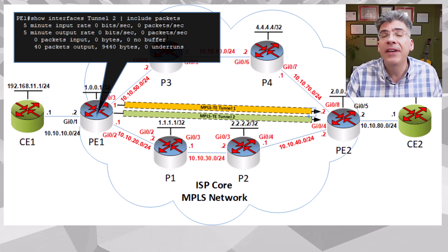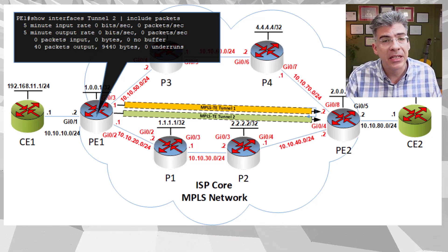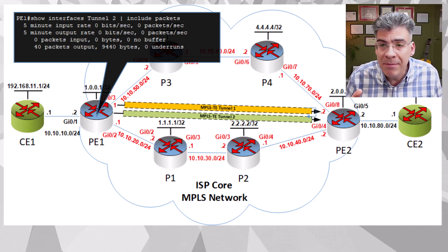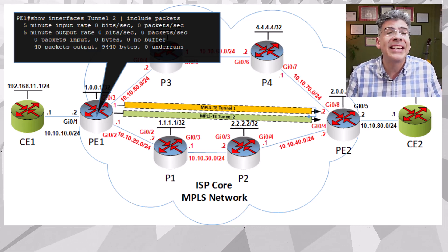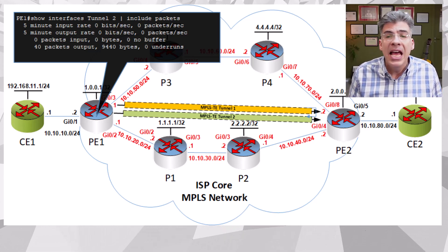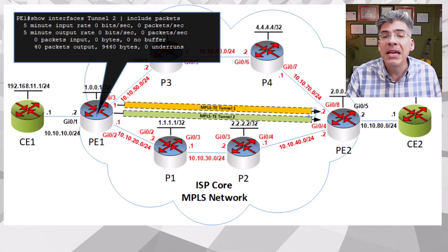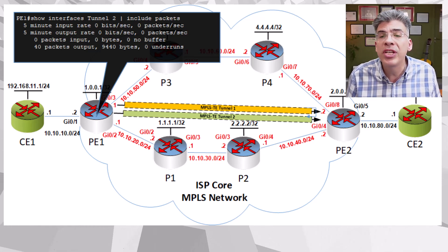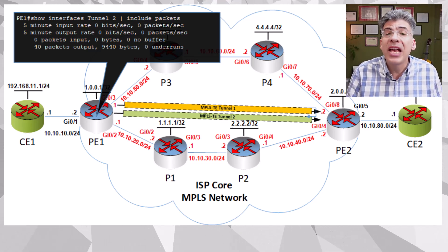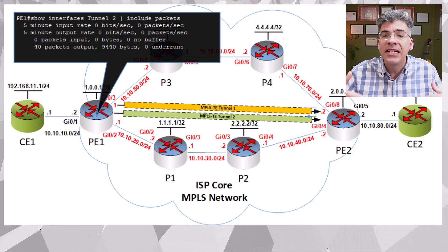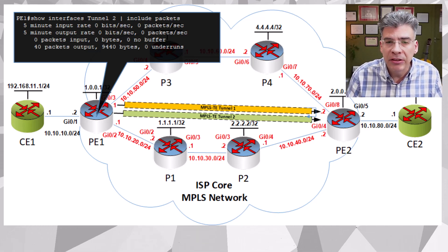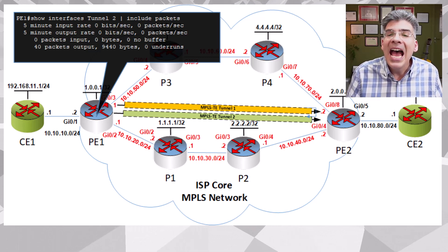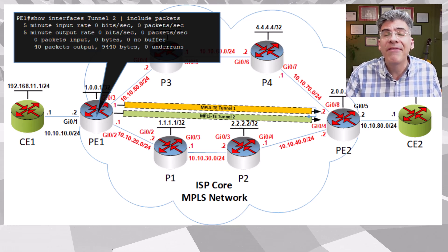We have successfully configured CBTS for our bundle of tunnels from PE1 to PE2. CBTS is usually used for QoS-based traffic steering, where one tunnel may be optimized with its RSVP bandwidth and affinity flags for VoIP traffic requiring low latency and high reliability, while another tunnel may be used for best-effort traffic like web browsing. CBTS may also be useful in a multi-tenant situation where one ISP uses one tunnel with a particular SLA while another ISP uses a different tunnel with a completely different SLA. With the vast number of tunnels you can include in a bundle, CBTS is very scalable for a wide variety of traffic types and requirements.